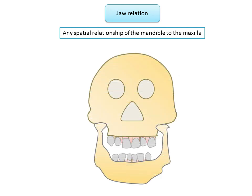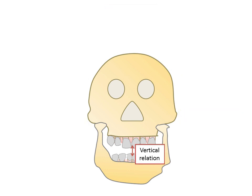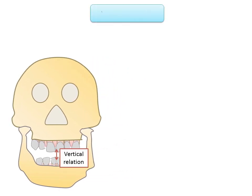It includes orientation jaw relation, which is the jaw relation when the mandible is kept in its most posterior position; horizontal jaw relation, which is the relationship of the mandible to the maxilla in a horizontal plane or in the anterior-posterior direction; and vertical jaw relation, which is the length of the face as determined by the amount of separation of the jaws.